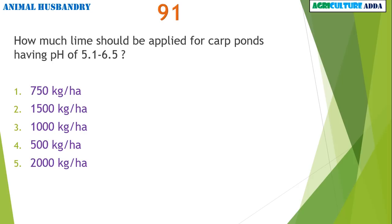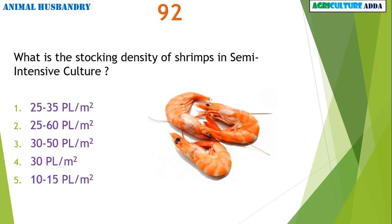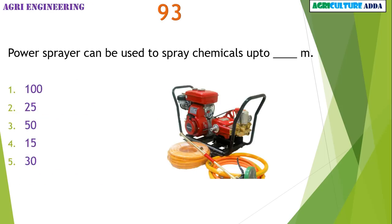How much lime should be applied for carp ponds having pH of 5.1 to 6.5? 1000 kg per hectare. What is the stocking density of shrimps in semi-intensive culture? 10 to 15 post larvae per square meter. Power sprayer can be used to spray chemicals up to 15 meters.